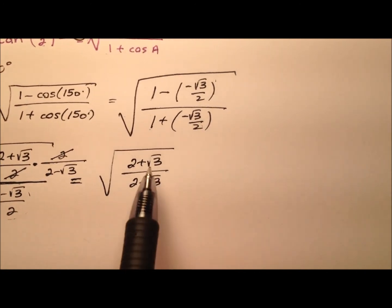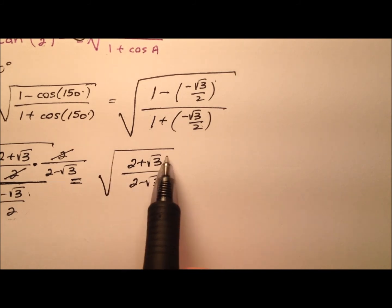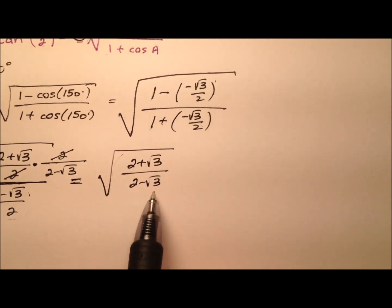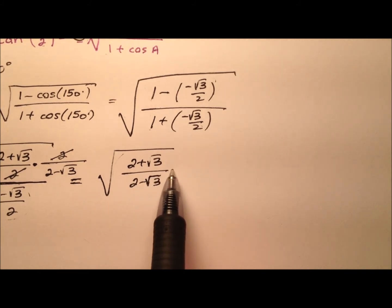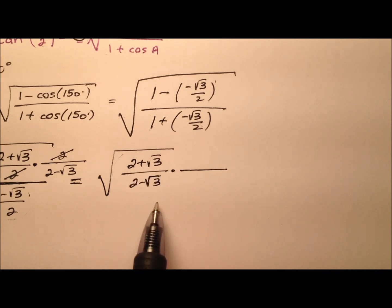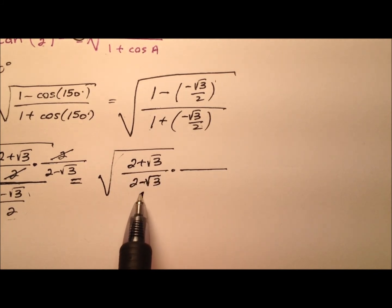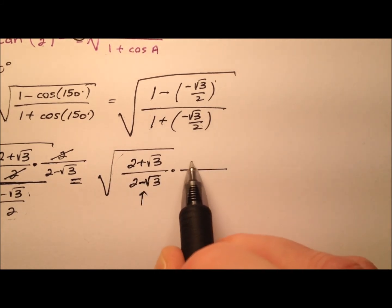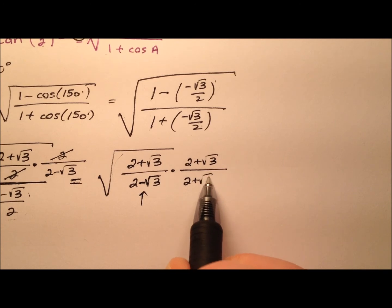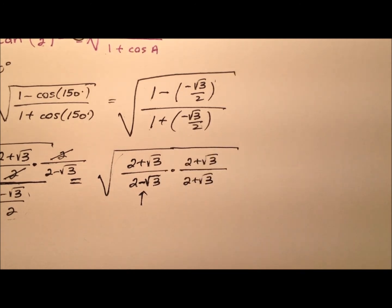Ignoring the radical for a moment and just looking at the radicand: we don't like having the square root expression in the denominator, so let's rationalize by changing the sign in the middle to get 2 plus the square root of 3, and multiply that on top and bottom. All of that remains under the radical.